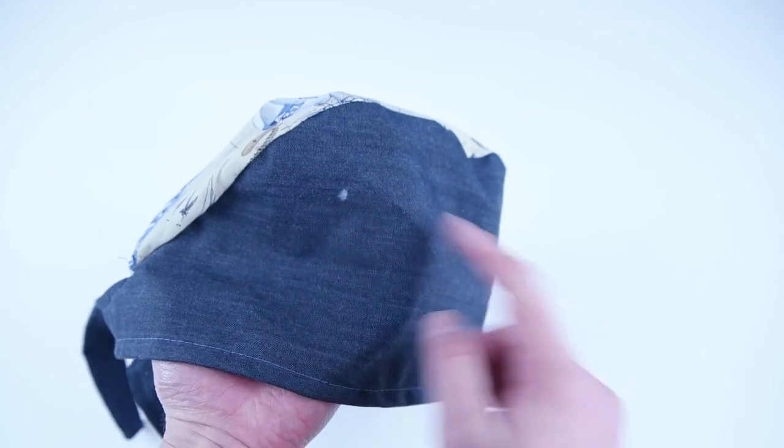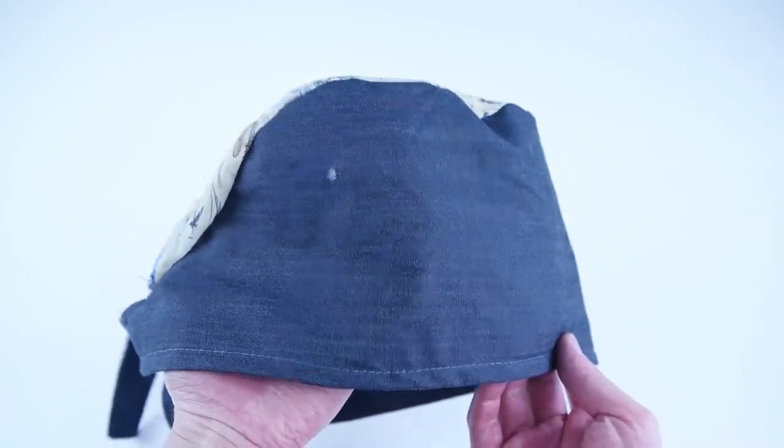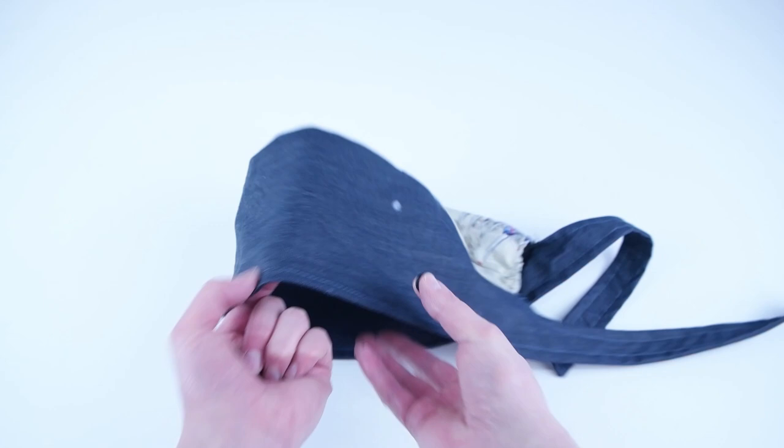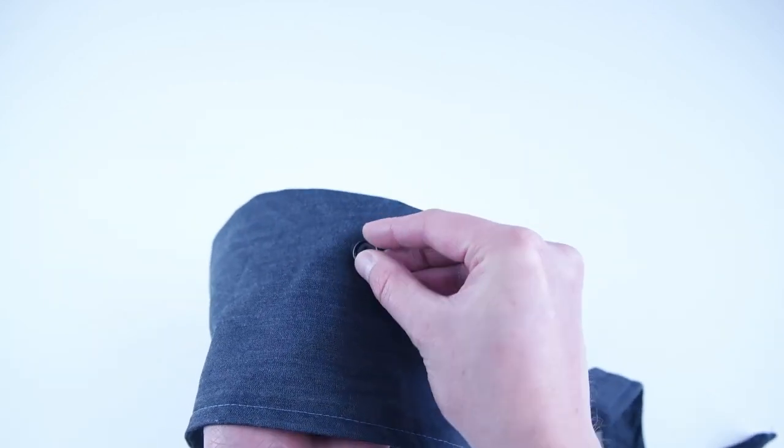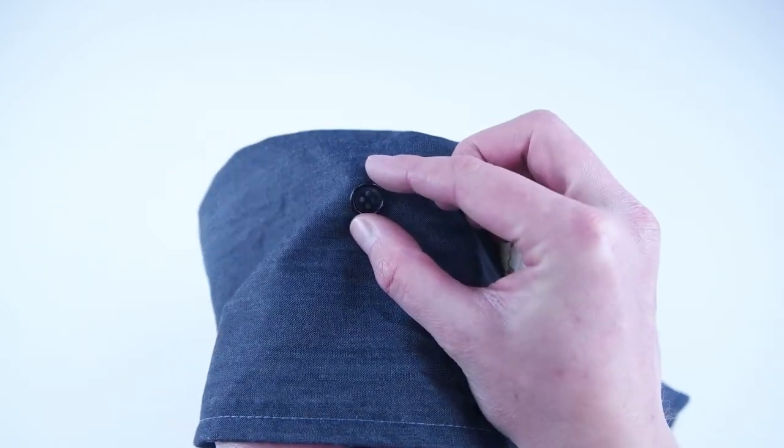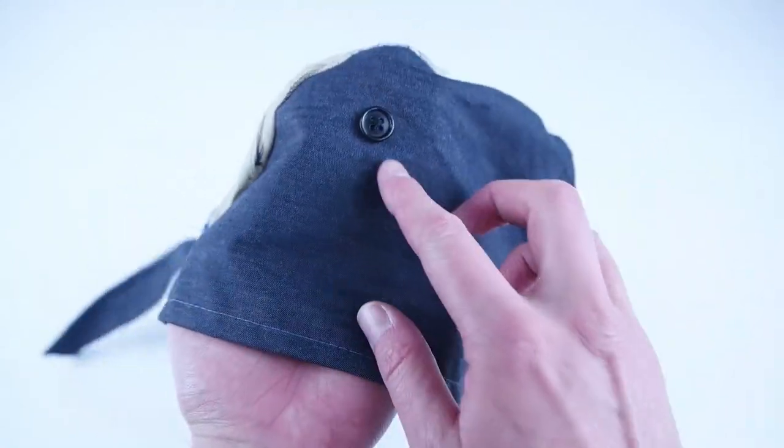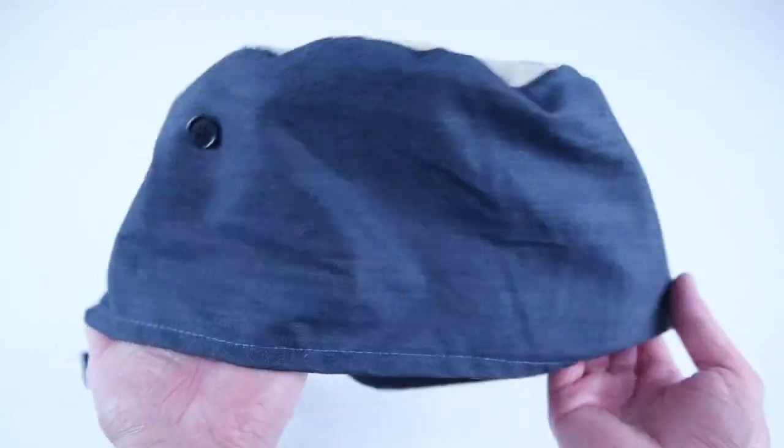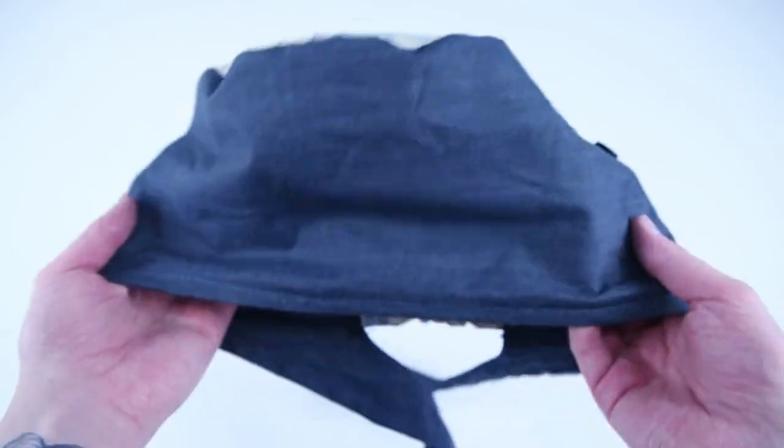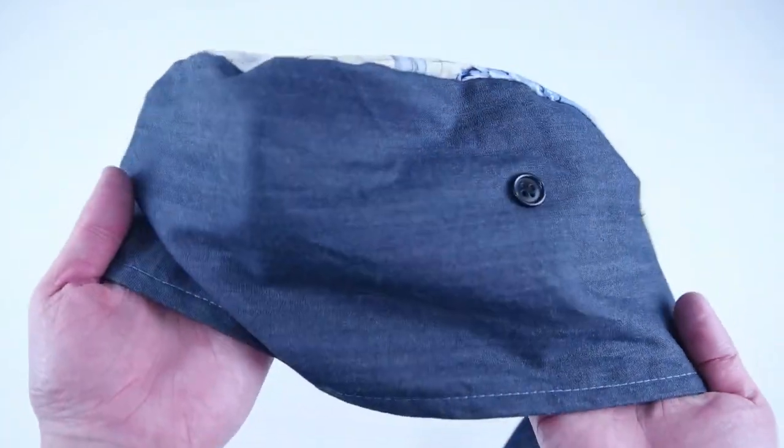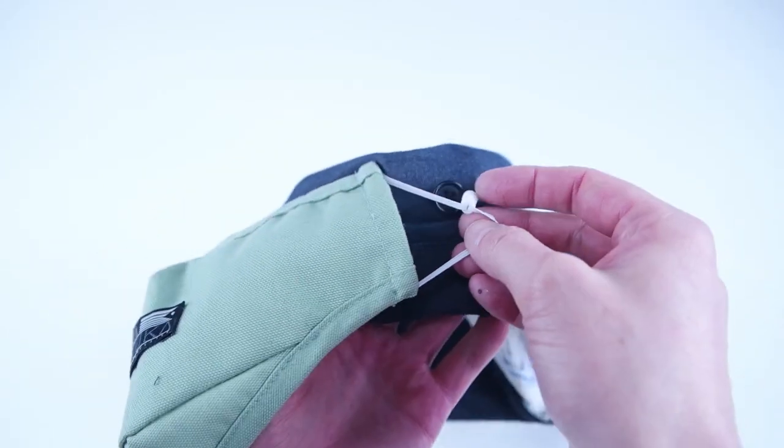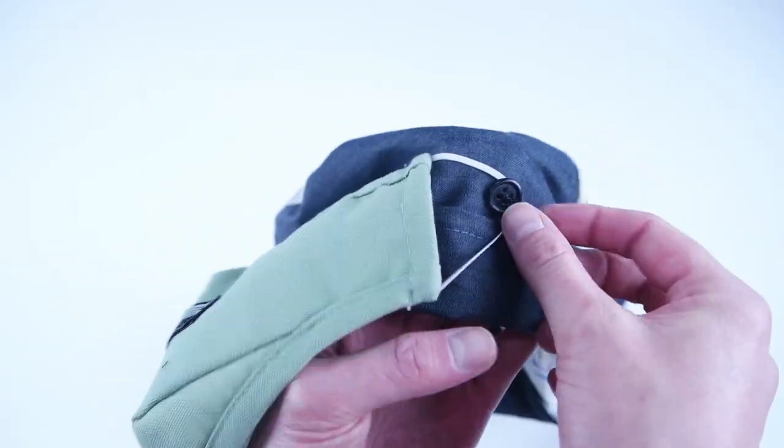And the last step is adding the buttons and this is gonna be different for everyone. I recommend putting the cap on and feeling where your ears are and then making your marks. Once you have your marks made you can hand sew your buttons on. And I definitely recommend adding the buttons. They save your ears a tremendous amount of stress from that elastic constantly pulling.